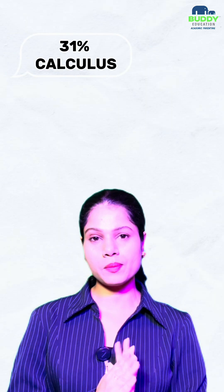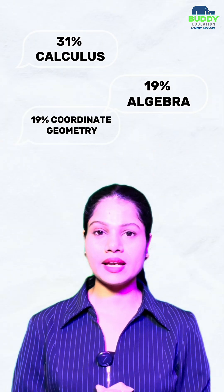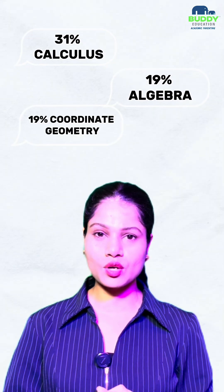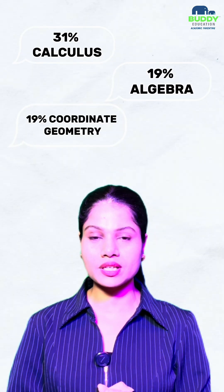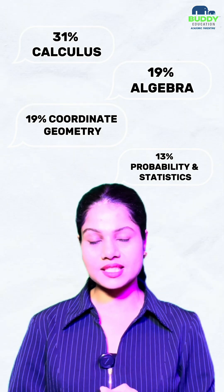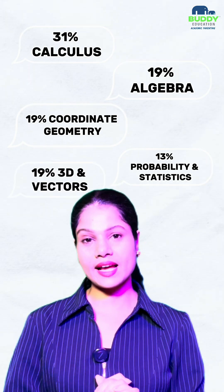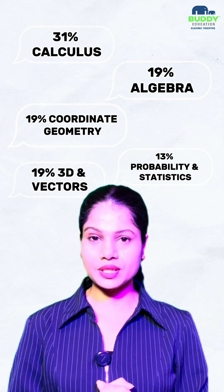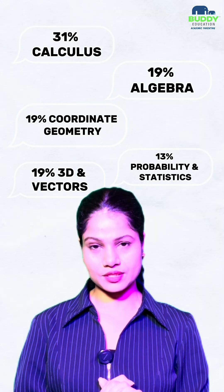Talking about topic-wise weightage: 31% was calculus, 19% algebra, 19% coordinate geometry, 13% probability and statistics, and 19% 3D and vectors. Moreover, 40% of the topics were from class 11 and 60% were from class 12.